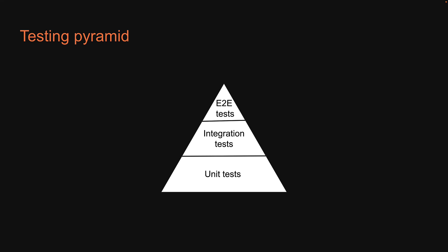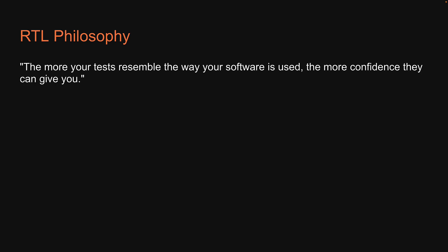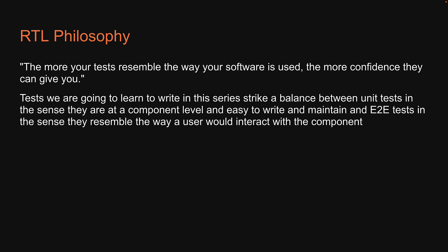Which brings us to the question: what sort of tests are we writing in this series? That is where the philosophy of React Testing Library comes into picture. It says the more your tests resemble the way your software is used, the more confidence they can give you. So the tests we are going to learn to write strike a balance between unit tests — in the sense they are at a component level and easy to write and maintain — and end-to-end tests, in the sense they resemble the way a user would interact with the component.